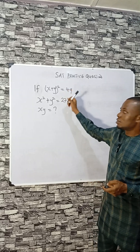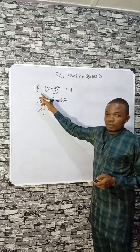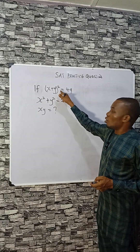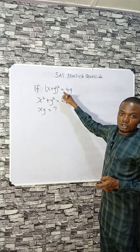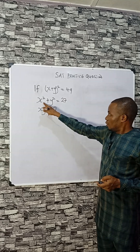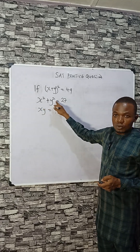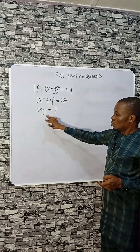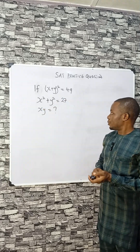Let's study this. If (x + y)² = 49, and x² + y² = 27, what is xy?